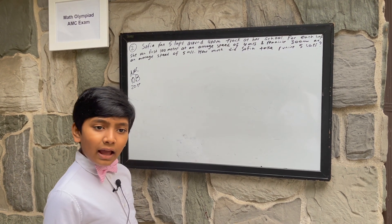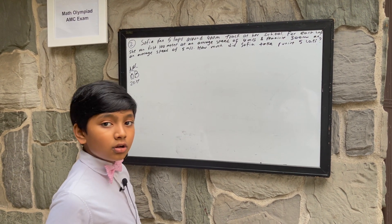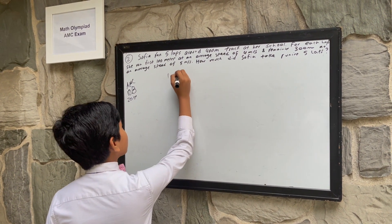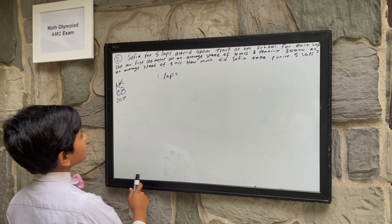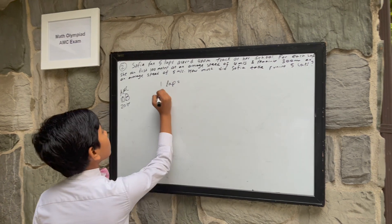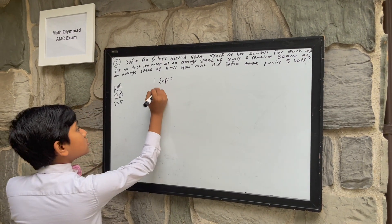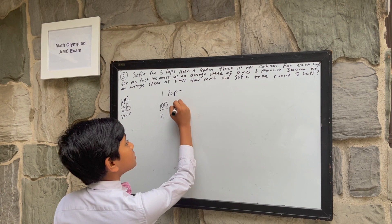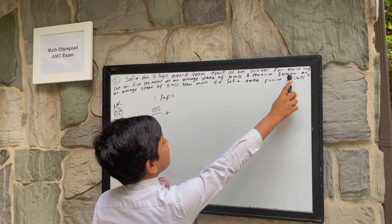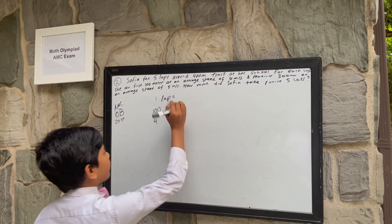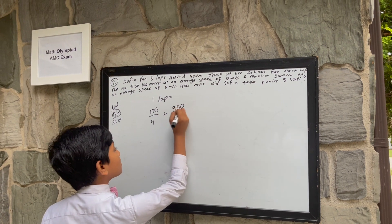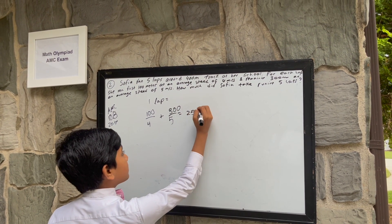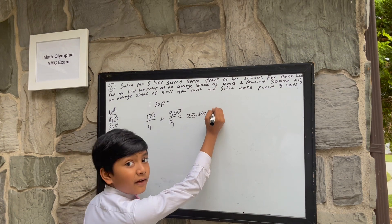This is one of the easier problems. Let's calculate one lap. It's just going to be equal to 100 meters over 4 meters per second, plus the remaining 300 meters over 5 meters per second. So that's 25 plus 60, which is 85 seconds.